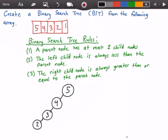Alright and last but not least, we have our value 1. We check to see if 1 is less than 5 and it is, so we go to the left of 5. Then we check if 1 is less than 4 and it is, so we go left. Then we check if 1 is less than 3 and it is, so we go left. And then we check if 1 is less than 2 and it is, so we go to the left of 2 and put in our value 1, or a node that contains the value 1.